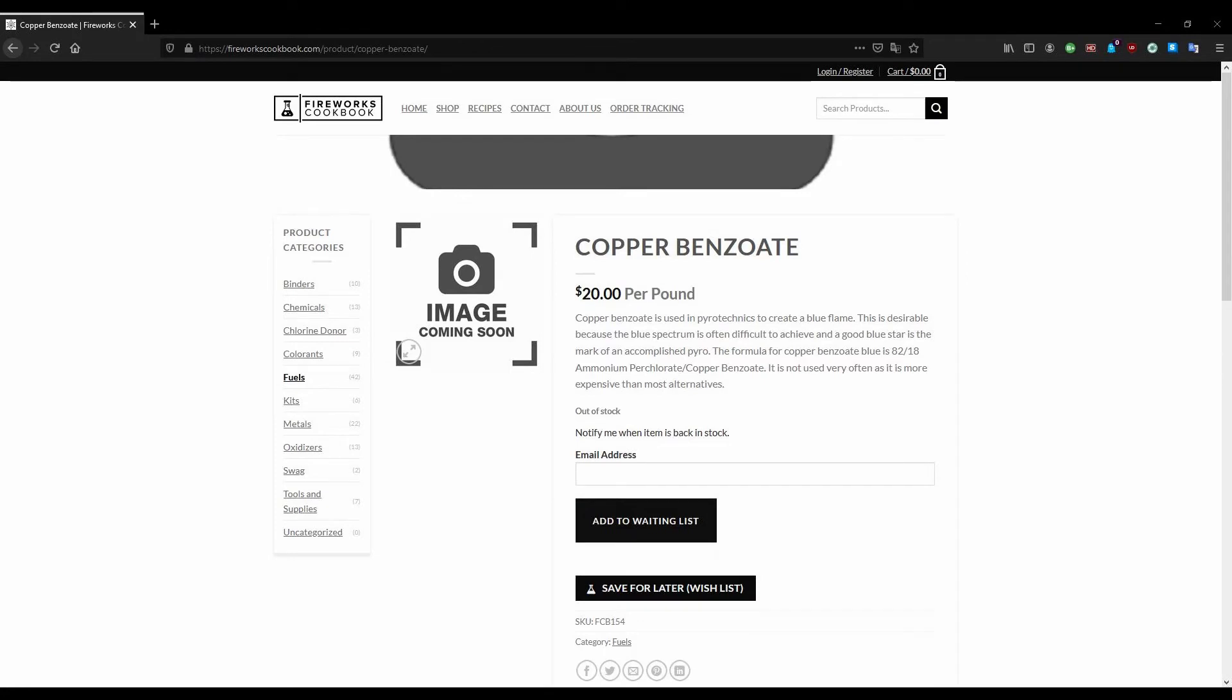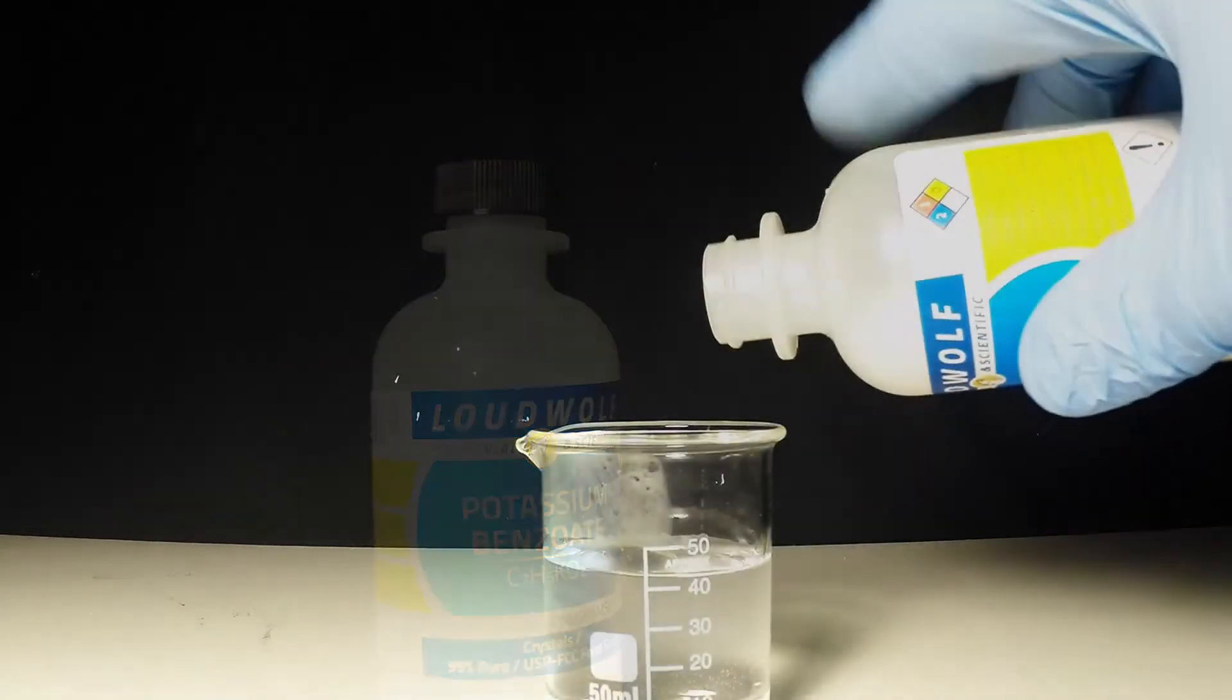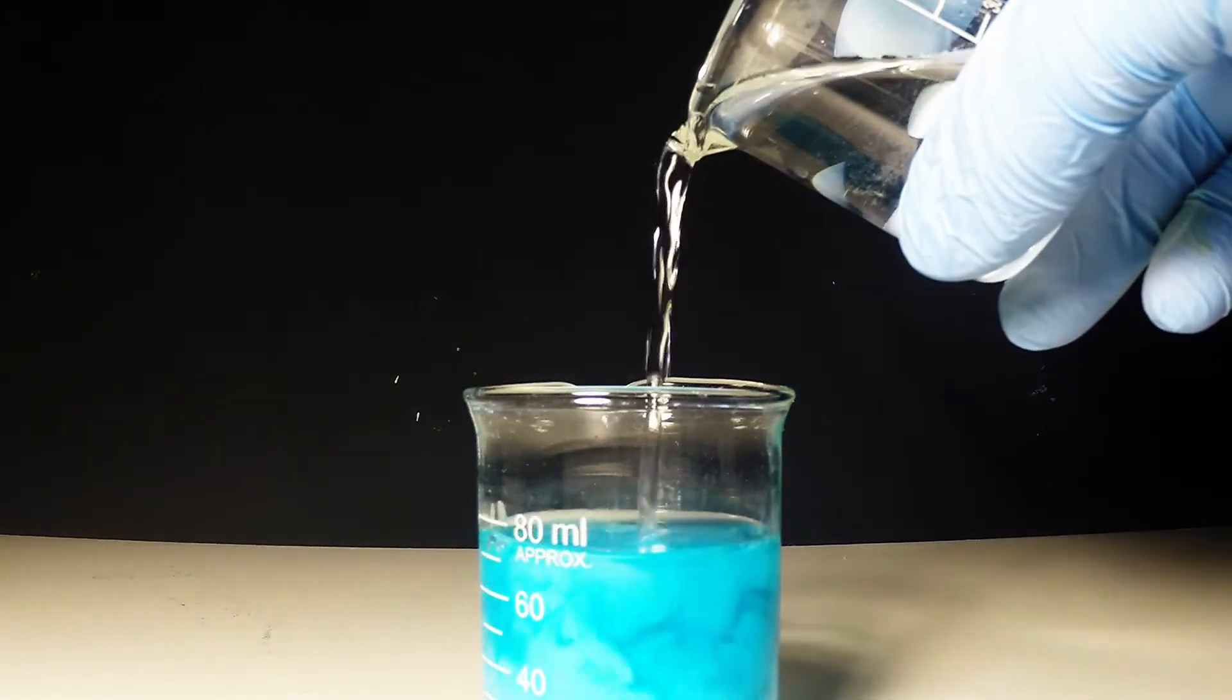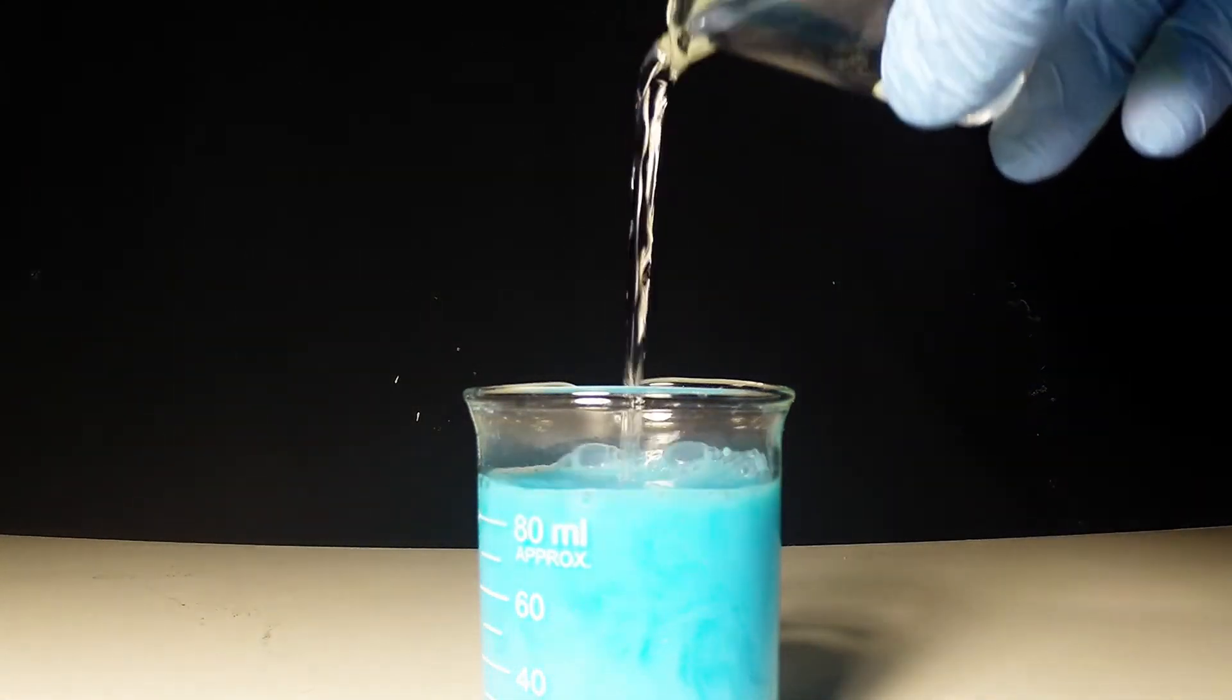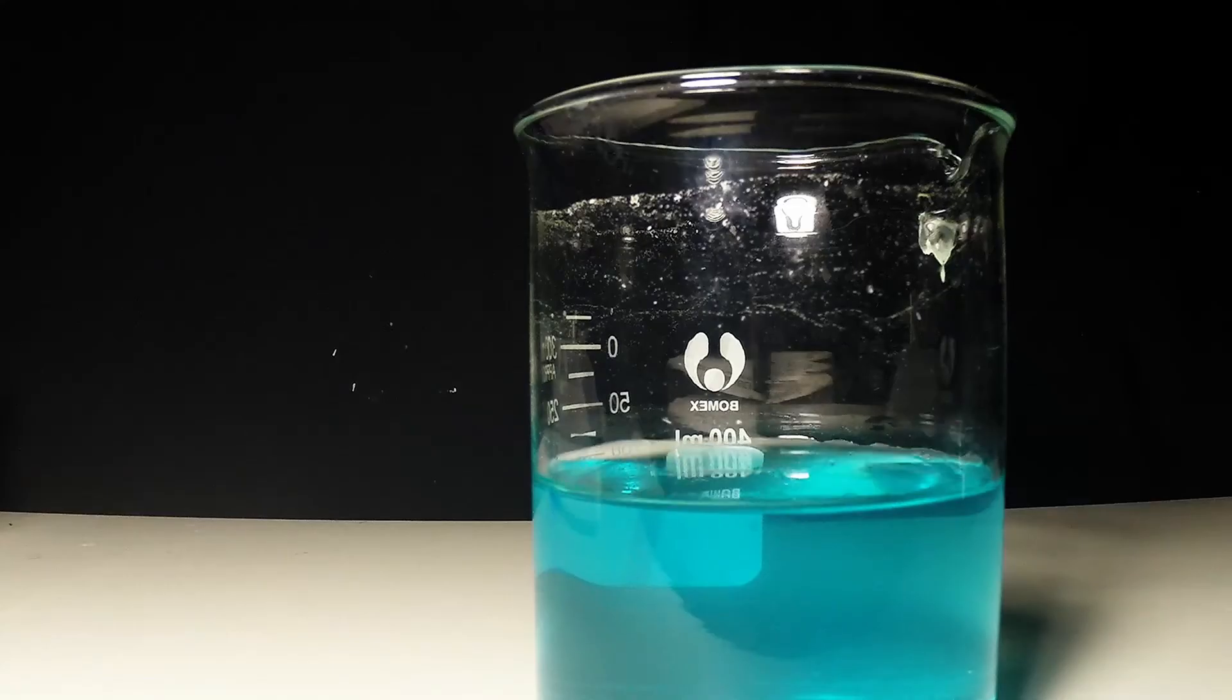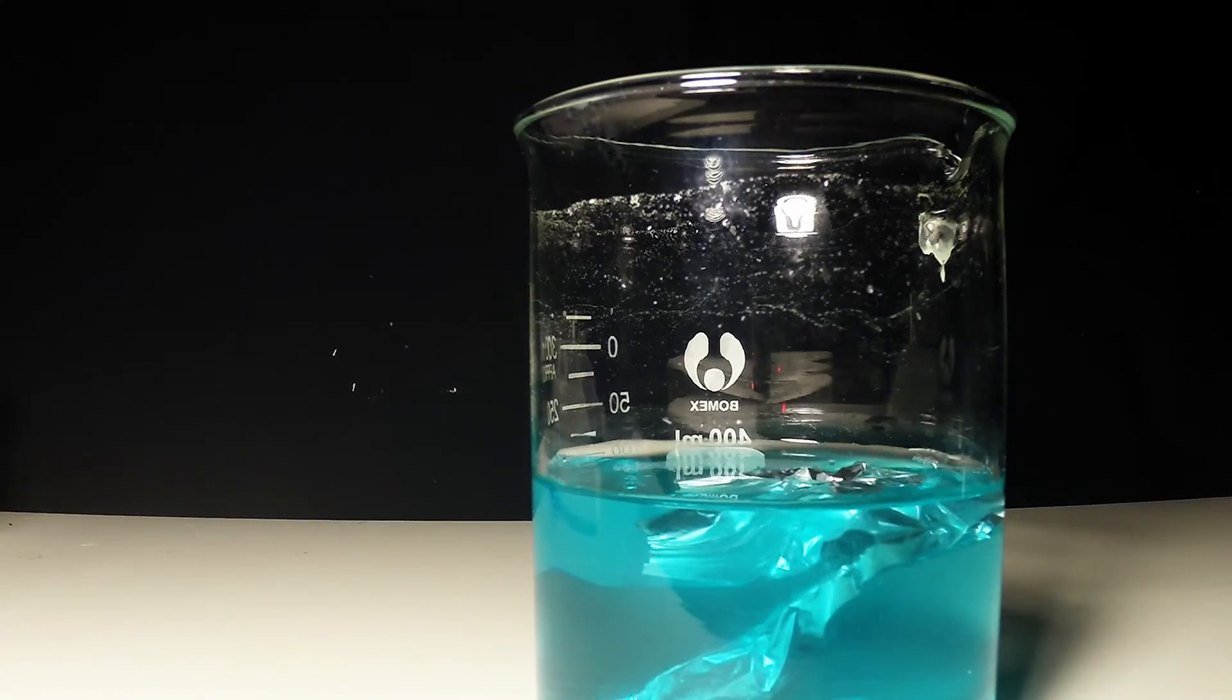Alright the last reaction is really straightforward. Let's say you want to experiment with copper benzoate but it's out of stock or it's too expensive. Fret not. Get some potassium benzoate and dissolve it in water and then pour that into any soluble copper solution. I'm using the sulfate here but the chloride or nitrate would work fine as well. Copper benzoate will precipitate and you can wash and dry as usual.